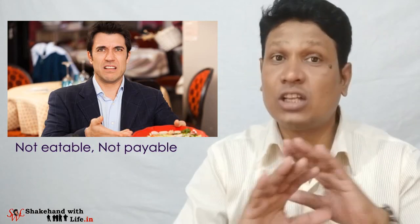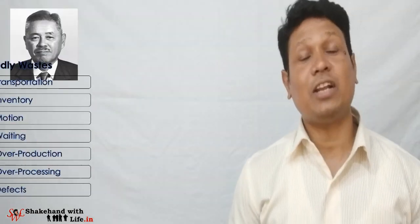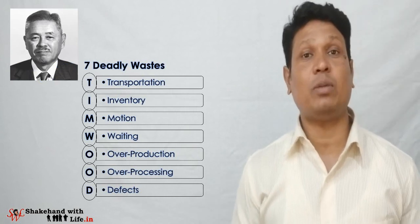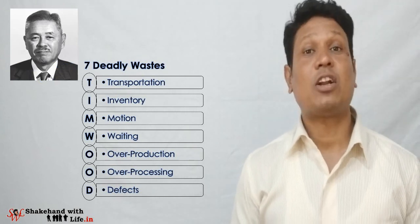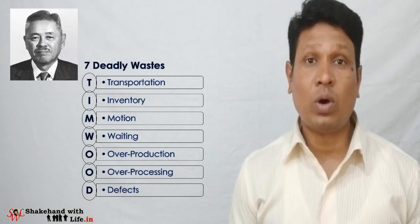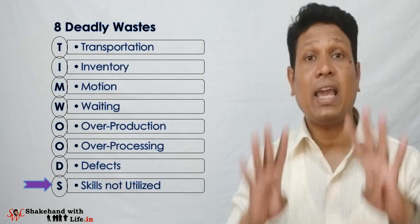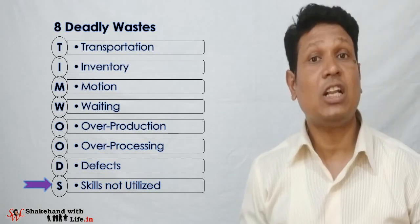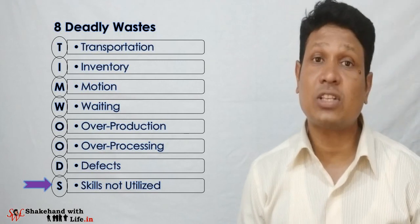Therefore, anything which is not valuable for the customer — anything for which the customer doesn't want to pay — is considered as Muda or waste. Taiichi Ohno identified the 7 deadly wastes in the Toyota Production System, referred by the acronym TIMWOOD: Transportation, Inventory, Motion, Waiting, Overproduction, Overprocessing, and Defects.